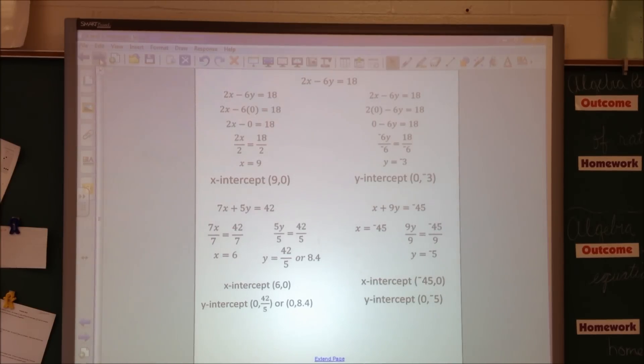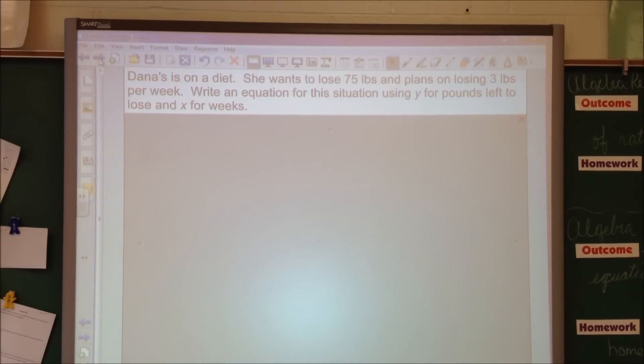Last one. We're given a situation. It says Dana is on a diet. She wants to lose 75 pounds and plans on losing 3 pounds per week. Write an equation for this situation using y for pounds left to lose, and x for weeks. We need to use the x and y because that's what they told me to use. The way I wrote mine is y equals 75 minus 3x. Or you could do it the other way, 75 minus 3x equals y.